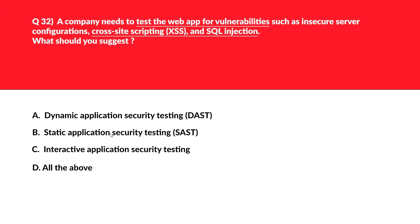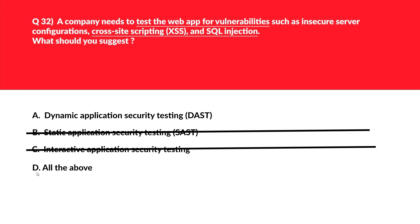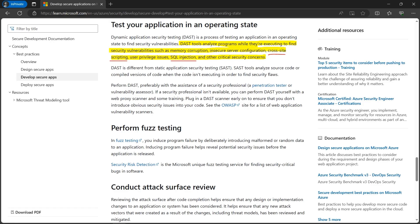The question is about running code, which is the opposite of SAST, so option B is out. Option C — Interactive Application Security Testing (IAST) — is associated with activities interacting with application functionality, which is not what the question requires, so C is incorrect. Option D is 'all of the above,' but since B and C are rejected, D is out too.